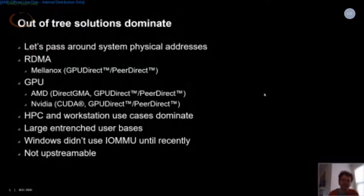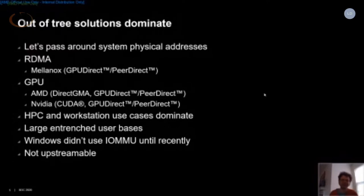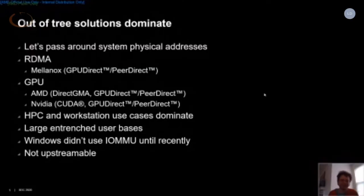These are largely focused around high-performance compute and workstation use cases, where users tended to be heavily tied into proprietary systems with large entrenched user bases. It also didn't help that until recently Windows didn't use the IOMMU, so passing around physical addresses kind of just worked. On Linux, the IOMMU has been used for IO remapping for ages, so passing around physical addresses means you're actually passing IO virtual addresses for a particular device. The advice for workstation users was often to disable the IOMMU, which prevents all the capabilities it provides.